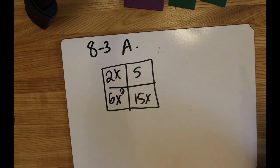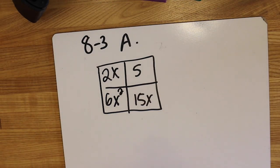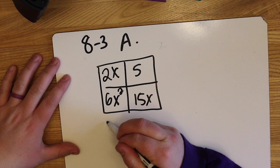In problem 3, they give us the generic rectangle. They want us to write the product and the sum from the generic rectangle given. So for this process, you need to work backwards.